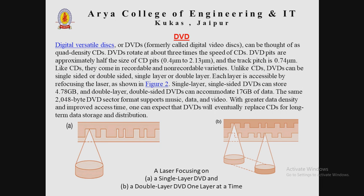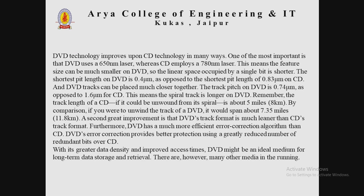One of the most important improvements is that DVD uses a 650 nm laser while CD employs a 780 nm laser, which means the feature size can be much smaller on DVD. The linear space occupied by a single bit is shorter — the shortest bit length on DVD is 0.4 micrometers, as opposed to 0.83 micrometers on CD. DVD tracks can also be placed much closer together; the track pitch on DVD is 0.74 micrometers as opposed to 1.6 micrometers for CD, meaning the spiral track is longer on DVD.